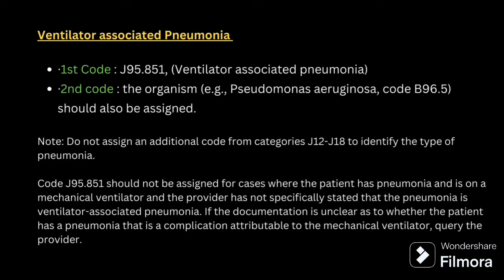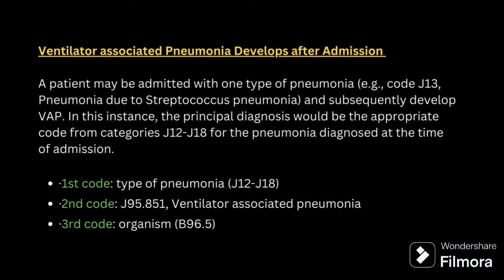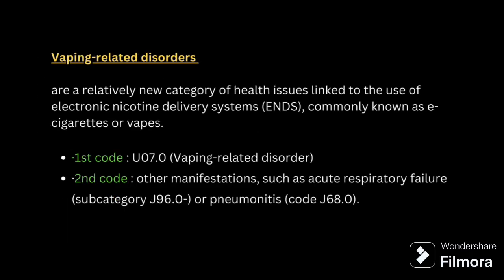For ventilator-associated pneumonia, if it is the primary reason for encounter, the primary code is J95.851, and the second code should be for the organism — B96.5. Pneumonia does not need to be coded separately. If the patient is admitted for a respiratory condition and later develops ventilator-associated pneumonia, first code the reason for encounter, second code ventilator-associated pneumonia, and third code the organism.